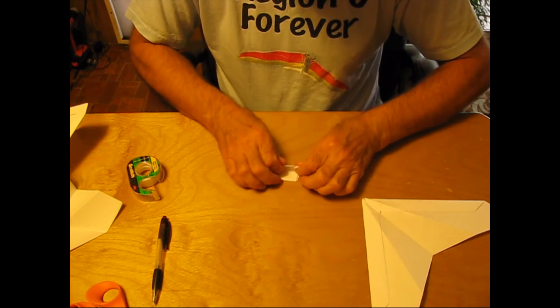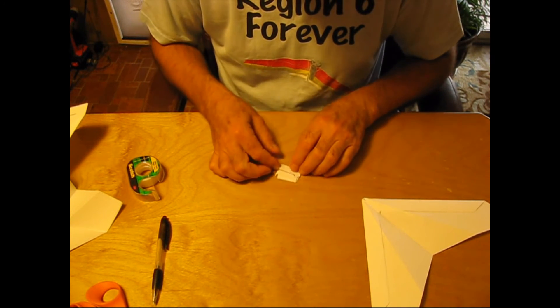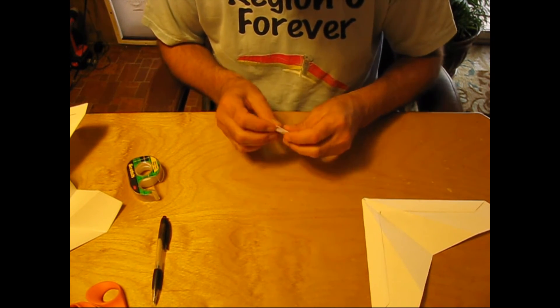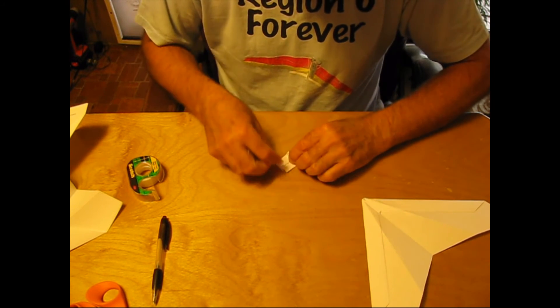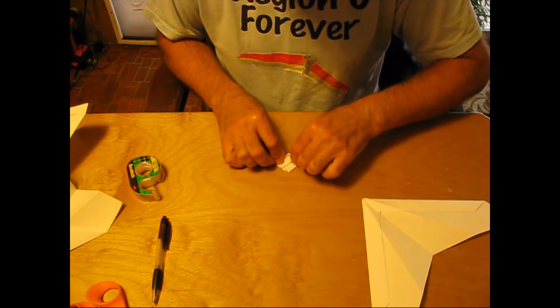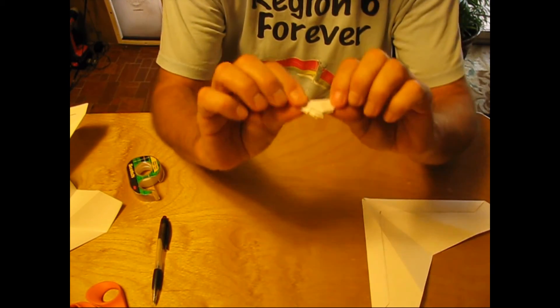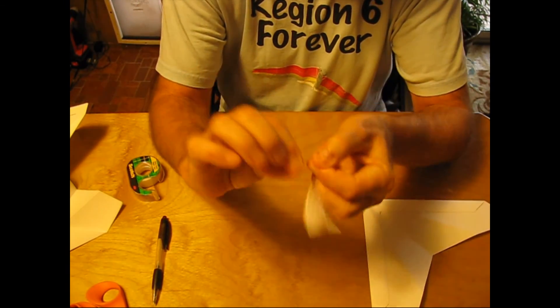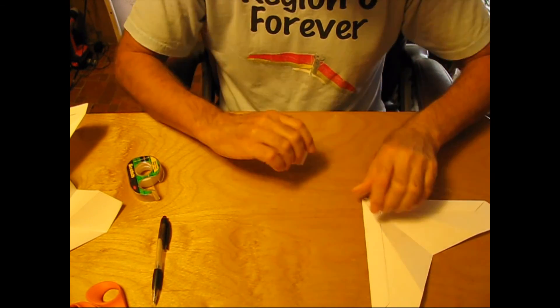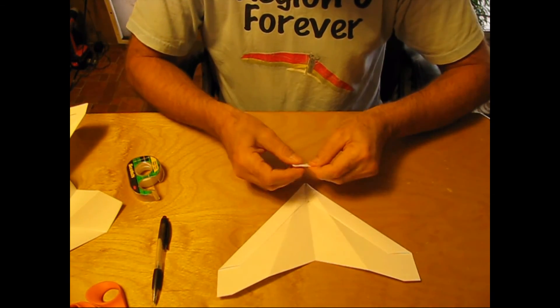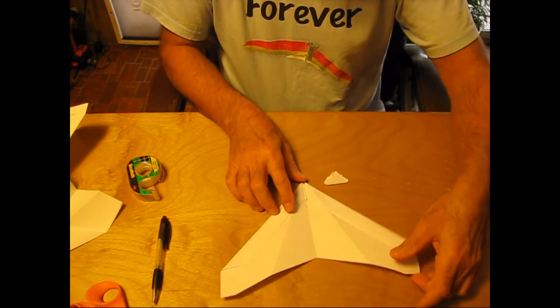And then we, okay like this. Now look I almost got a perfect square. Not perfect. But we know if we take something close to a square and then fold it like that. And it's roughly a triangle. Ugly little triangle. That's the worst one I've ever folded. But for the sake of this all it is going to do is put weight on the nose as well as strengthen the wing in the middle.